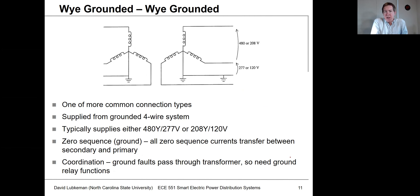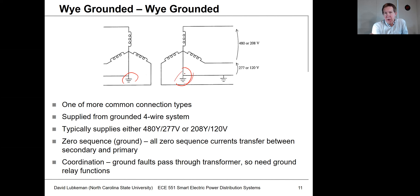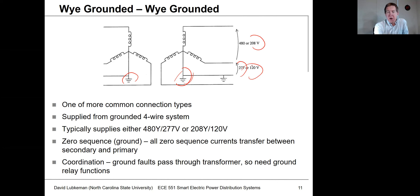The Y-ground/Y-ground connection is very common. If you're going to supply industrial load at 480 volts or commercial load at 208 volts line, this is likely the transformer connection you'll see. Both sides have solidly grounded windings. On the secondary side you're making the ground for the customer — 480 volts line corresponds to 277 volts line-to-neutral, or for commercial load, 208 volts line corresponds to 120 volts. If there's a fault on the secondary side, you'll see a neutral current on the primary side.